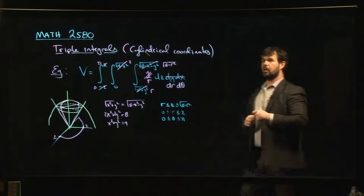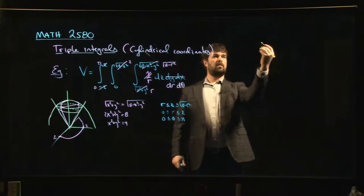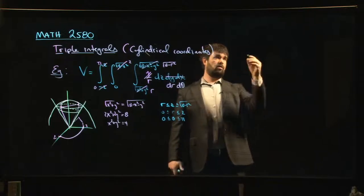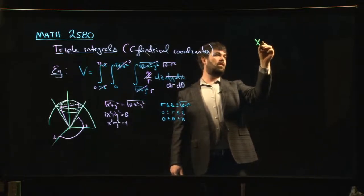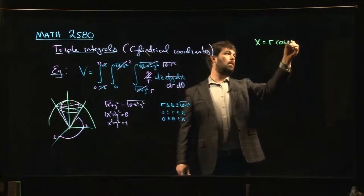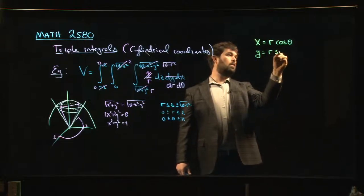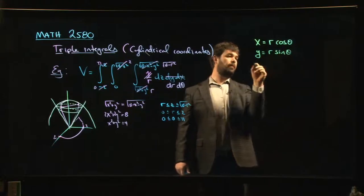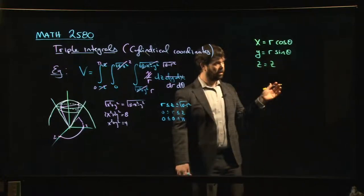So here's what the cylindrical coordinate transformation looks like. Let me give you the formulas first and then we'll draw the picture so you can see how this fits in. So we define x to be r cos theta, we define y to be r sin theta, and z, well, we just leave z as z.